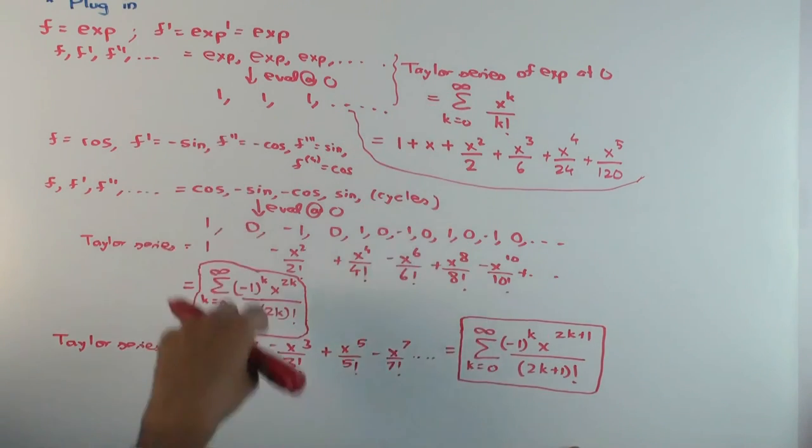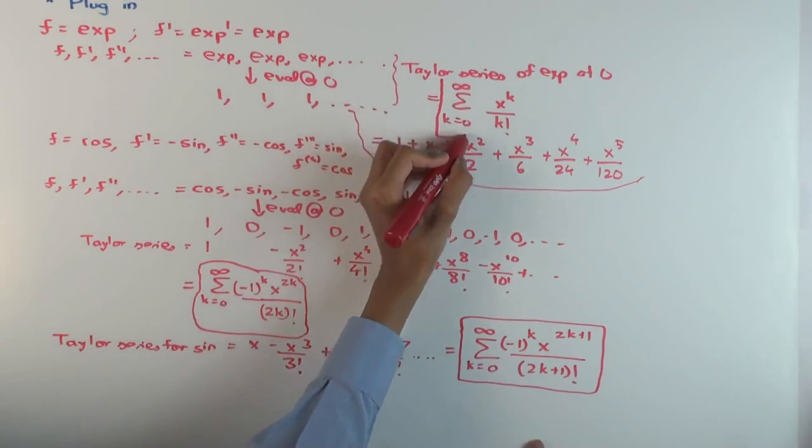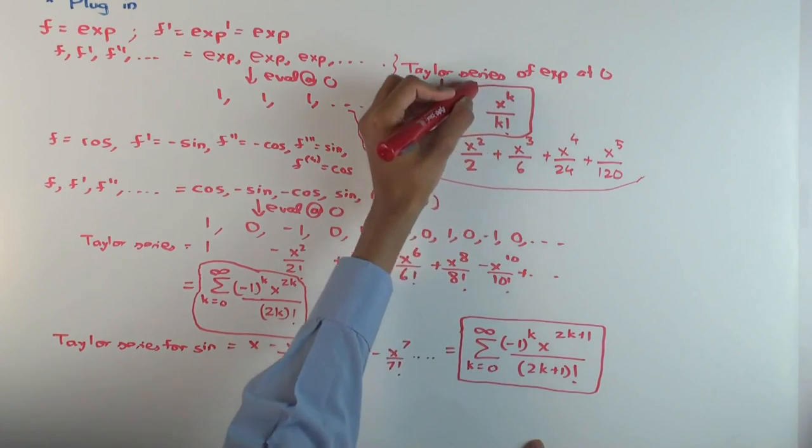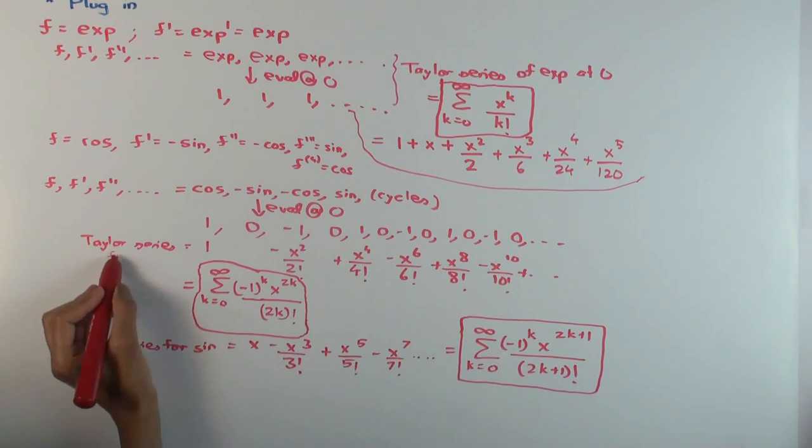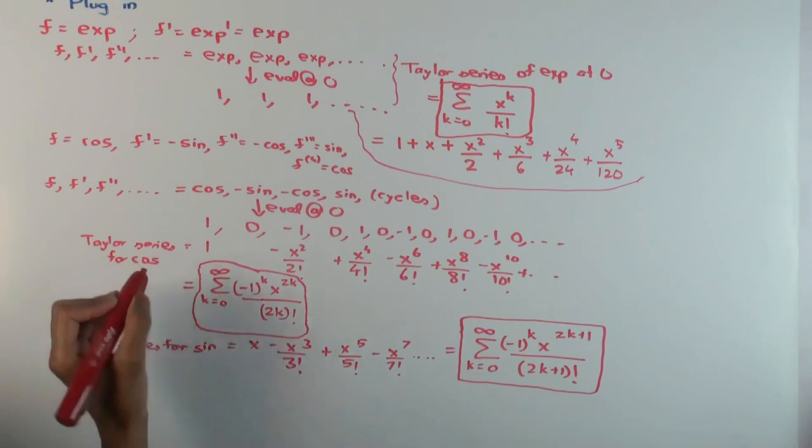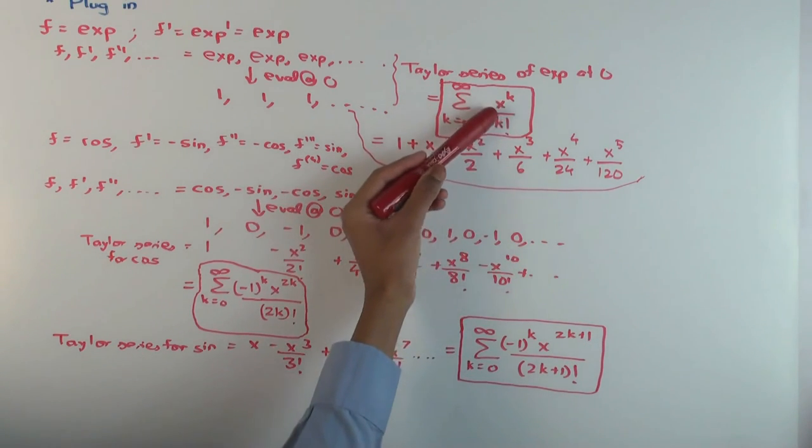Okay, now one thing I want to say: we've calculated the Taylor series for these three functions - exponential, cosine and sine. We wrote down the first few terms and now some of you may be aware that these Taylor series actually converge back to the function.